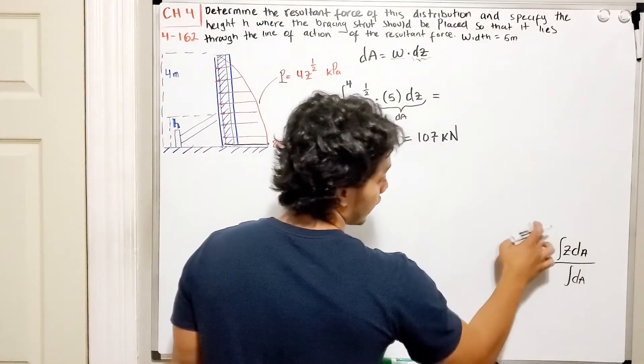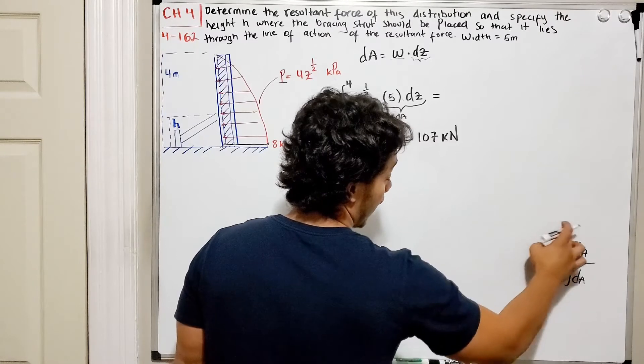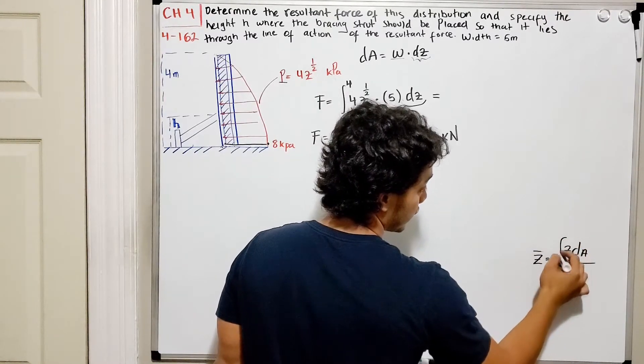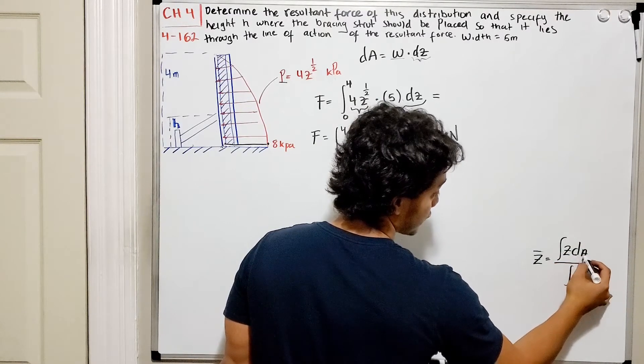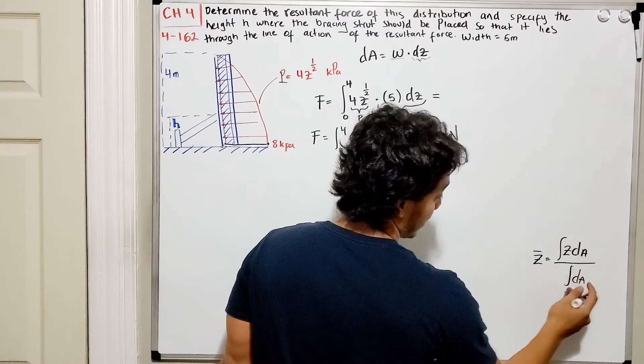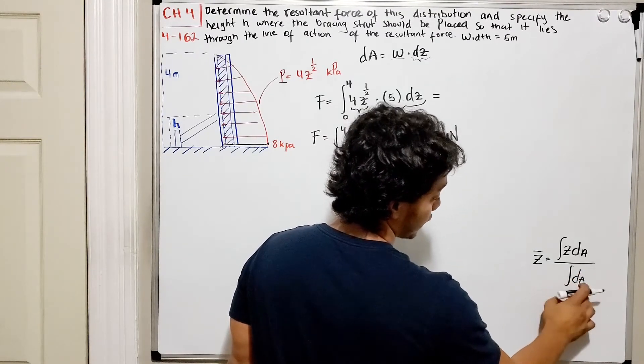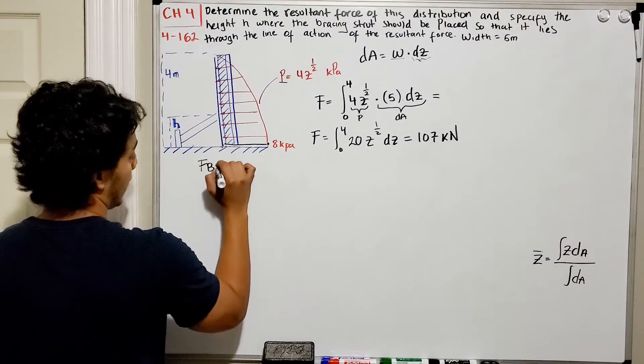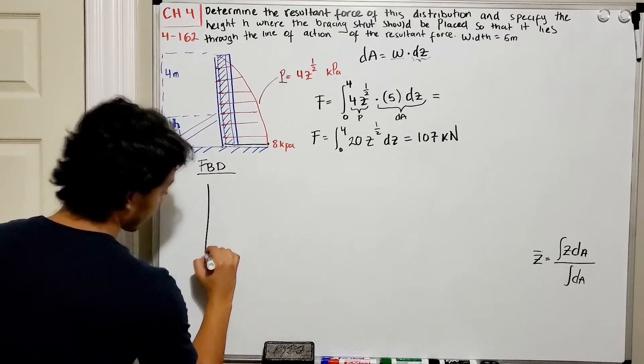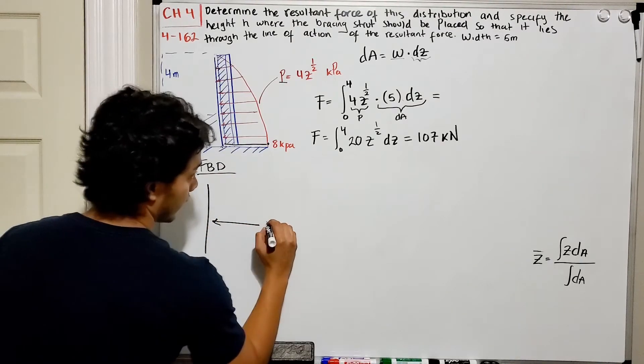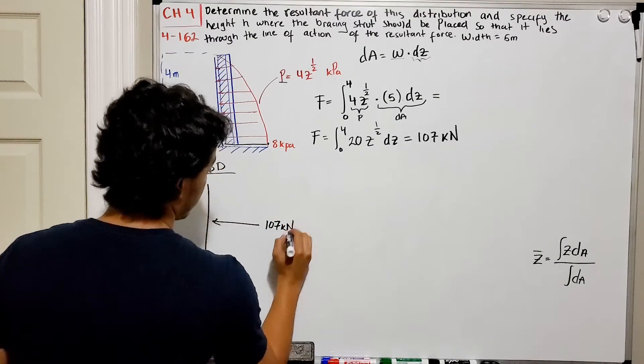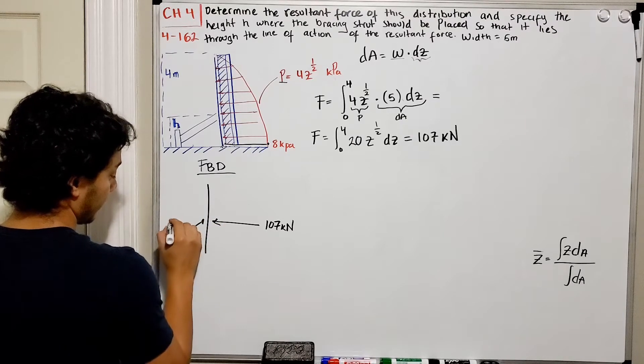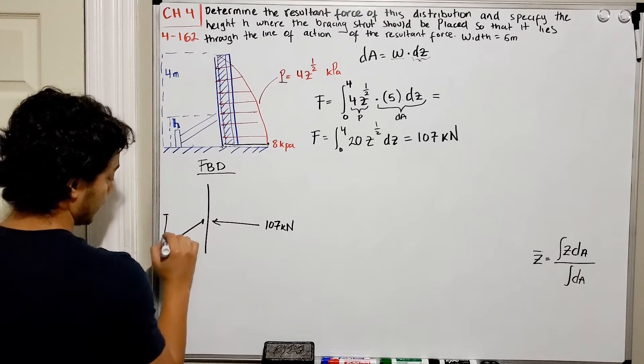In order to do that, we need to follow this formula. This formula tells us that the force, the summatory of Z multiplied by force, the distribution force, is going to be divided by the summatory of the change, the force with respect to the change in the area. So if we follow that, let's draw our free body diagram. I'll have a force of 107 kN, so that I can place my bracing thrust at my height H, near to here is H.